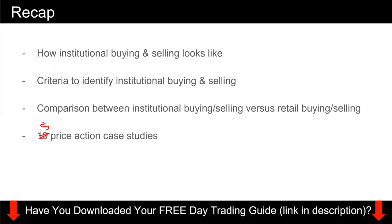As a recap: I showed you how institutional buying and selling looks like with two comparison charts. I went through the three criteria — departure of the level, number of candles, large extended range candles, and the mix of candles (mixed, all buying, or all selling). I also did a comparison between institutional and retail buying and selling, showing a side-by-side of how each looks.